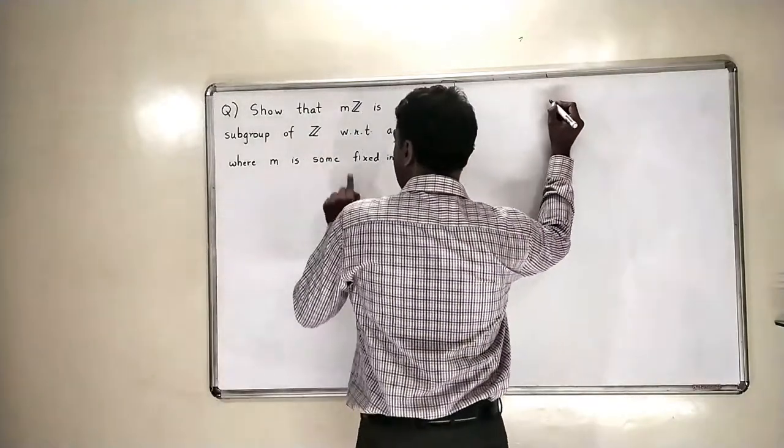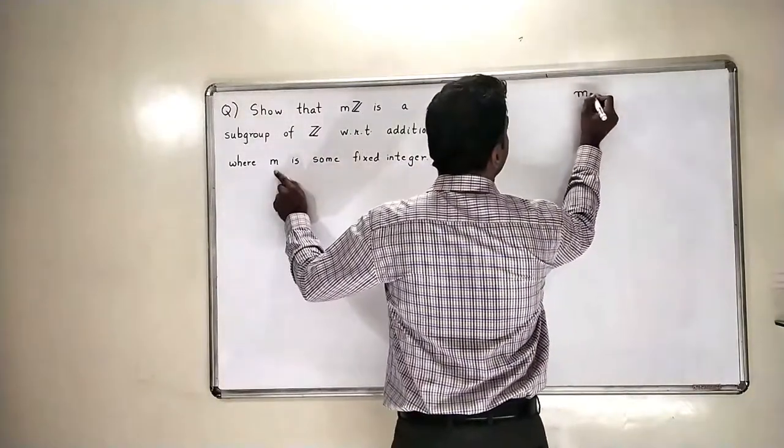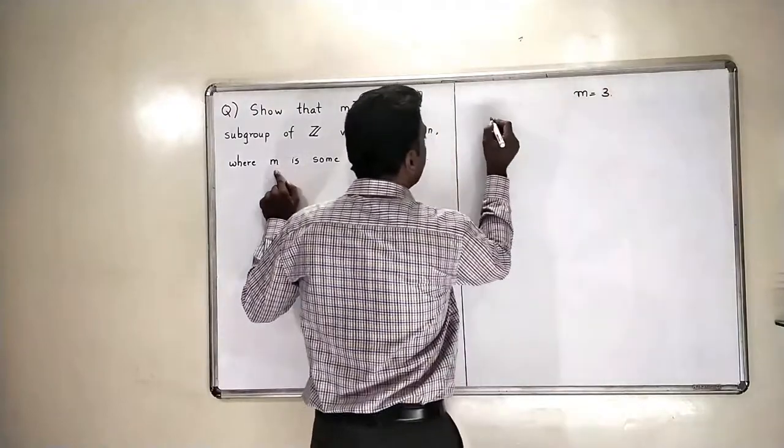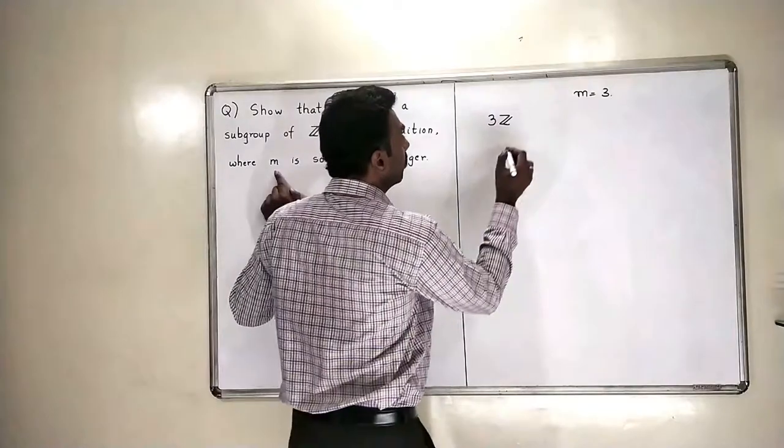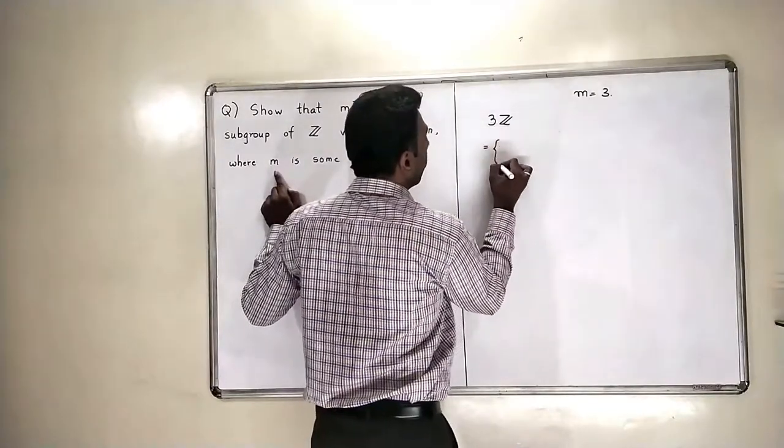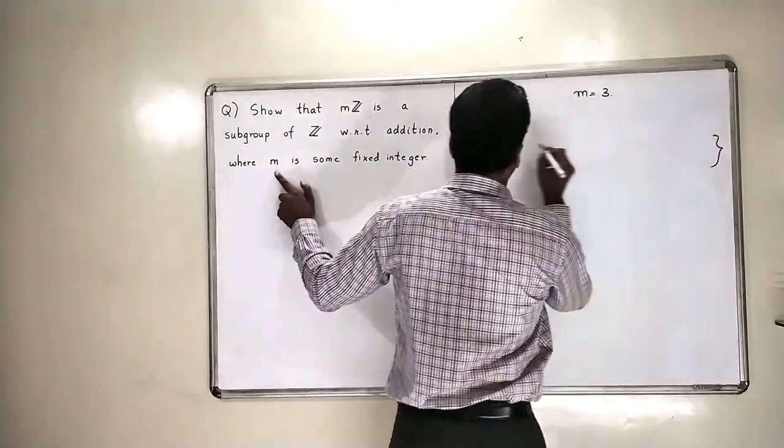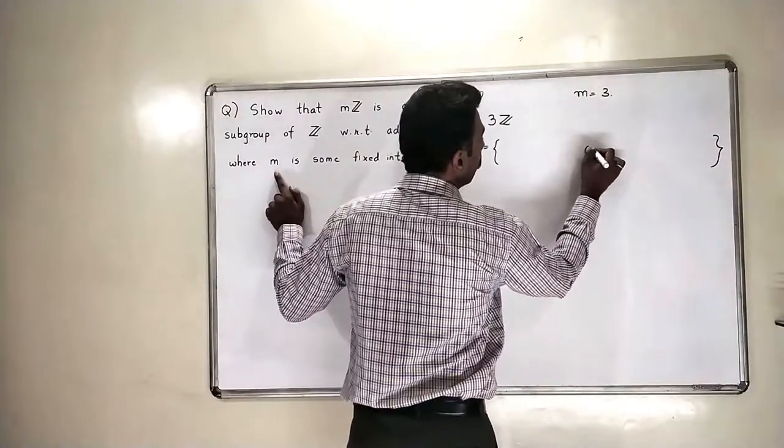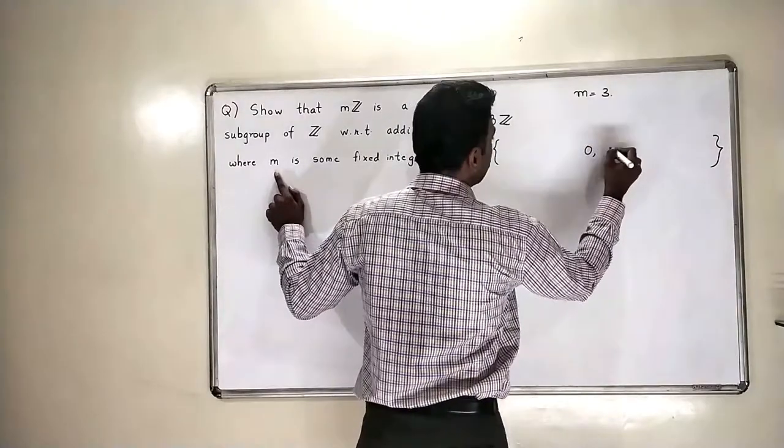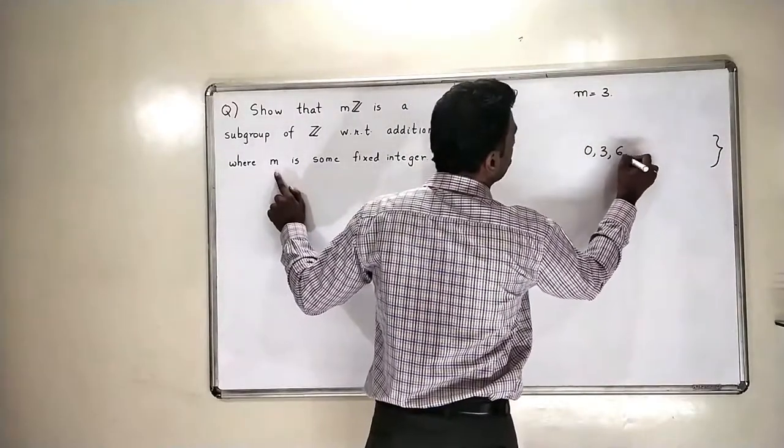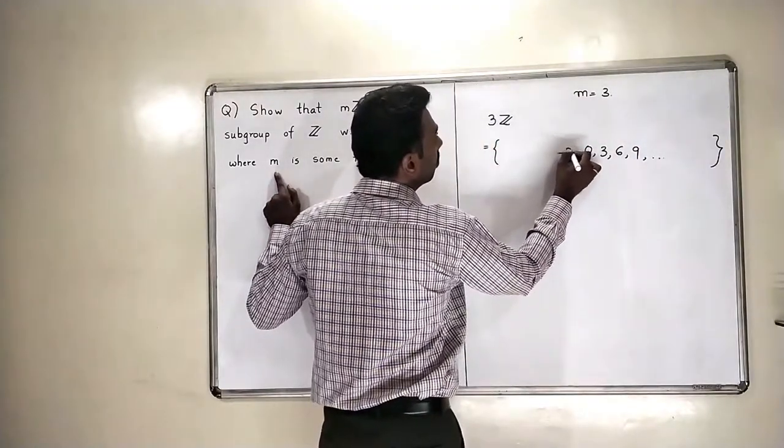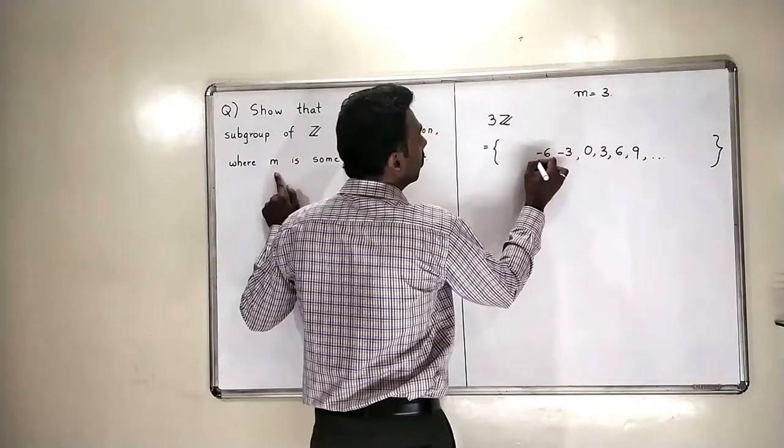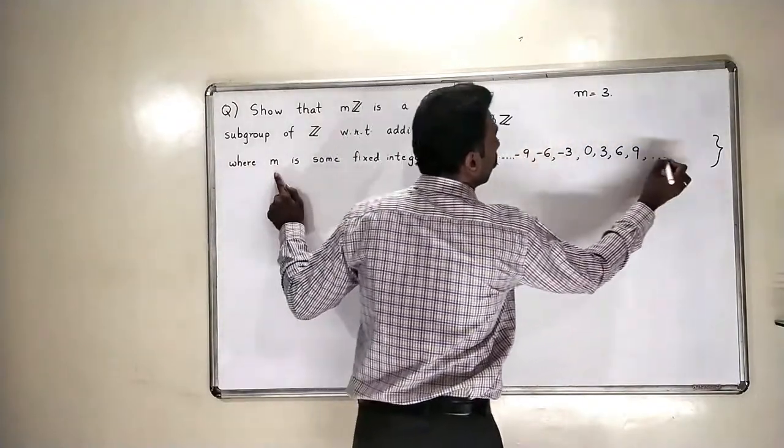Suppose I am taking m is 3, then I will have 3Z. Now, what is 3Z? 3Z means I am going to multiply all integers by 3. So, 0, 1 multiplied by 3 is 3, 6, 9 and so on. Negative integers, minus 3, minus 6, minus 9 and so on.